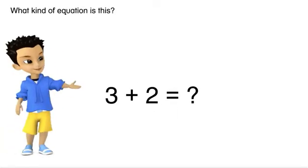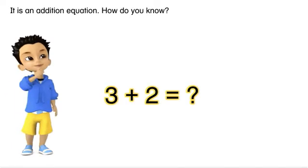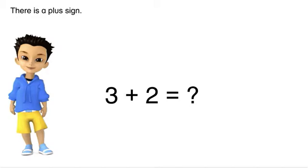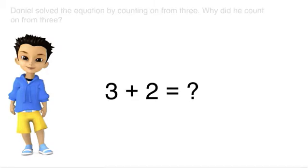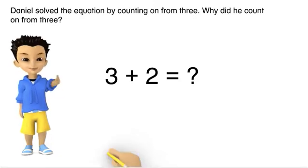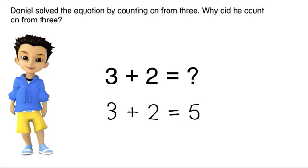What kind of equation is this? It is an addition equation. How do you know? There is a plus sign. Three, four, five. Three plus two equals five. Daniel solved the equation by counting on from three. Why did he count on from three?